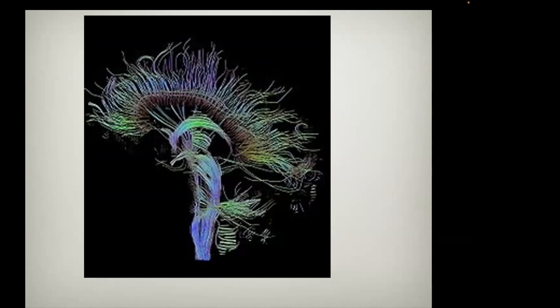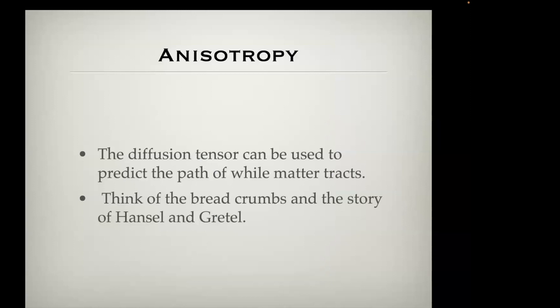This makes possible tractography images, which are created using computer assistance by linking together tensors that seem to match best. There is a little subjectivity in the creation of these models, but they are visually very appealing and teach us something about the structure of tissues in the brain. The prediction of white matter track paths is like breadcrumbs in Hansel and Gretel — you go from one tensor to the next to create models of how the tracks are aligned.